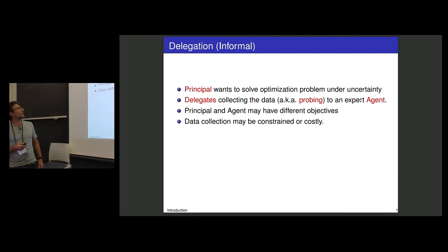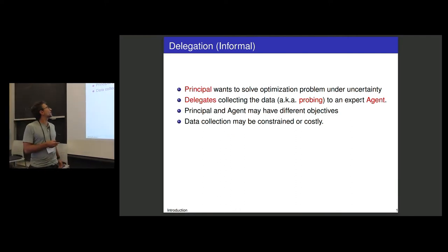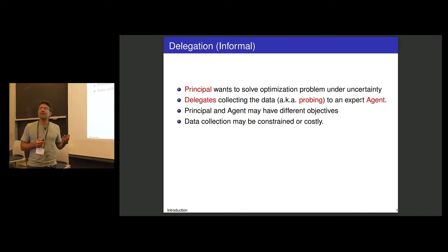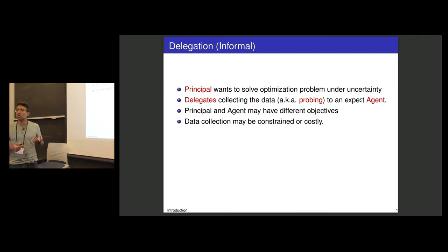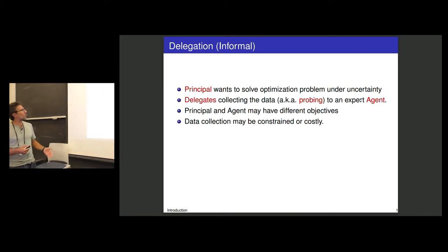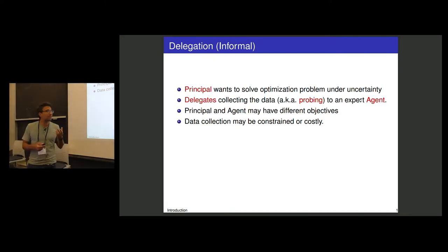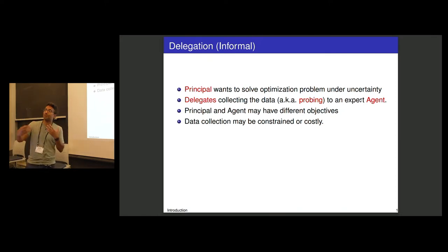Let me introduce the idea of delegation informally. Here you have a principal who wants to solve some optimization problem subject to uncertainty. He might delegate collecting the data to an expert agent, because perhaps the principal doesn't have the expertise to explore the possible space of solutions and assess the quality of various solutions. We call exploring the data 'probing' in this talk. The game-theoretic difficulty is that the principal and agent may have different objectives, so the agent may shade their reports or shade the information they provide in order to further their own interests.